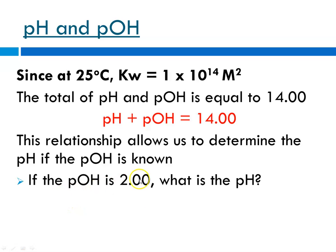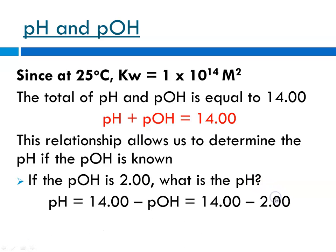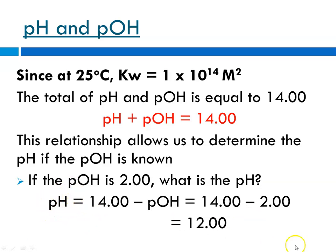If the pOH is 2, what is the pH? pH equals 14 minus pOH. 14 minus 2 equals 12. So at that point the pH equals 12, meaning we have a basic solution.